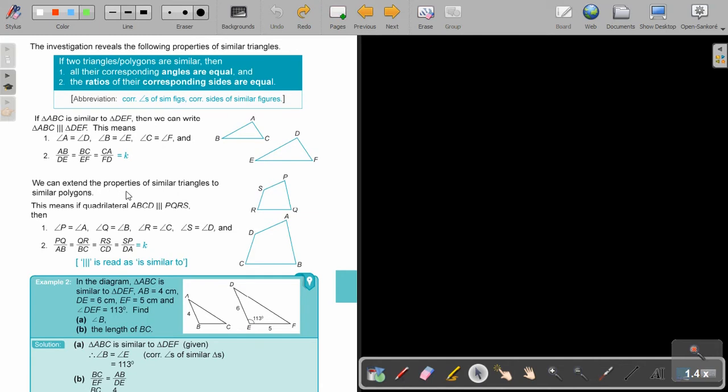We can extend the properties of similar triangles to similar polygons and it's exactly the same way. So the corresponding angles: A is equal to P, B is equal to Q, C is equal to R, D is equal to S. And then we can say the sides AB over PQ, BC over QR, CD over RS, and AD over SP. That symbol is read as similar to.